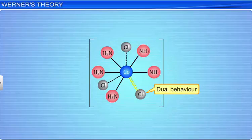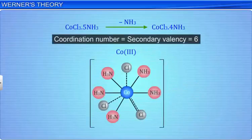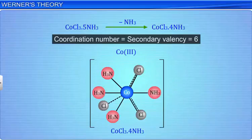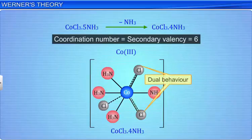Similarly, in CoCl3·4NH3, to satisfy the secondary valency of 6, 2 chloride ions assume dual behavior. In modern terms, the complex can be written as [Co(NH3)4Cl2]Cl.